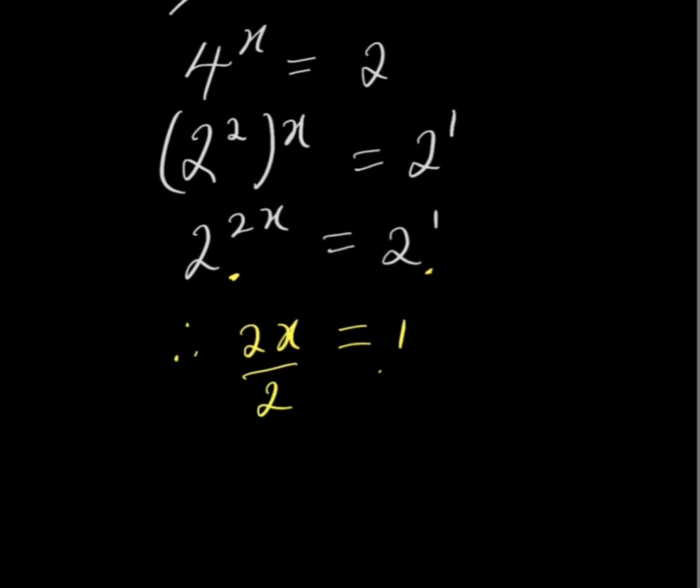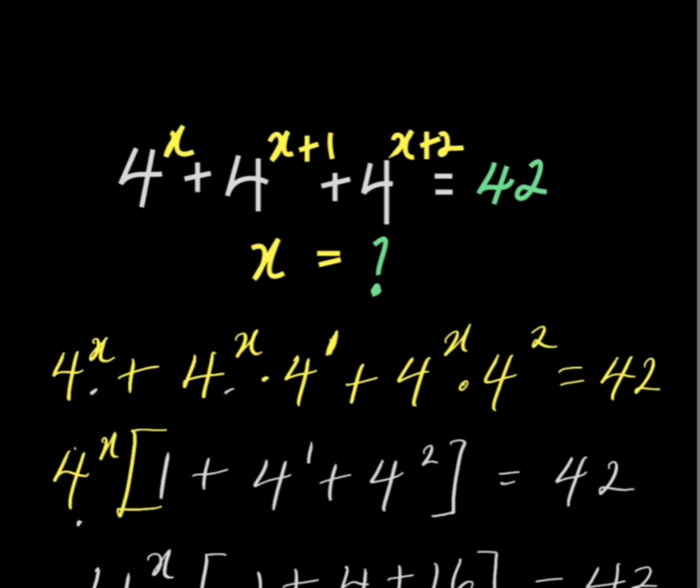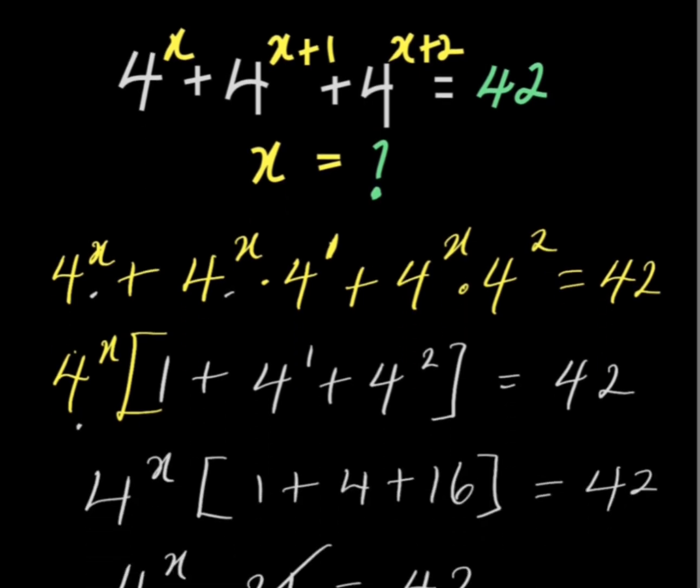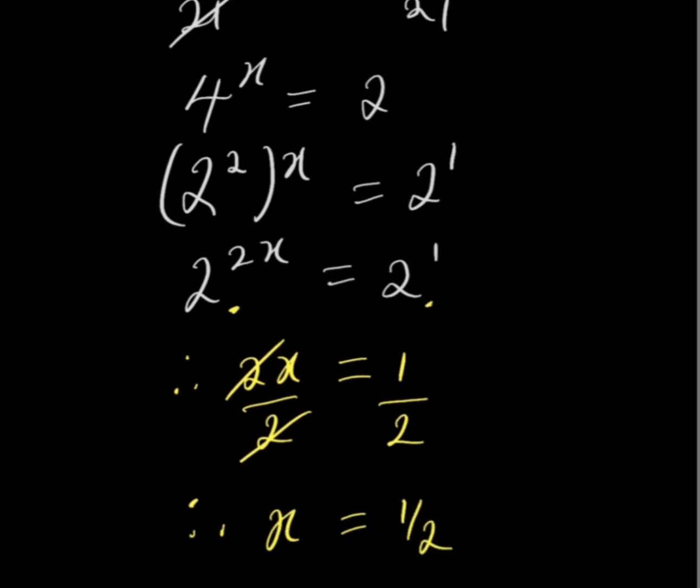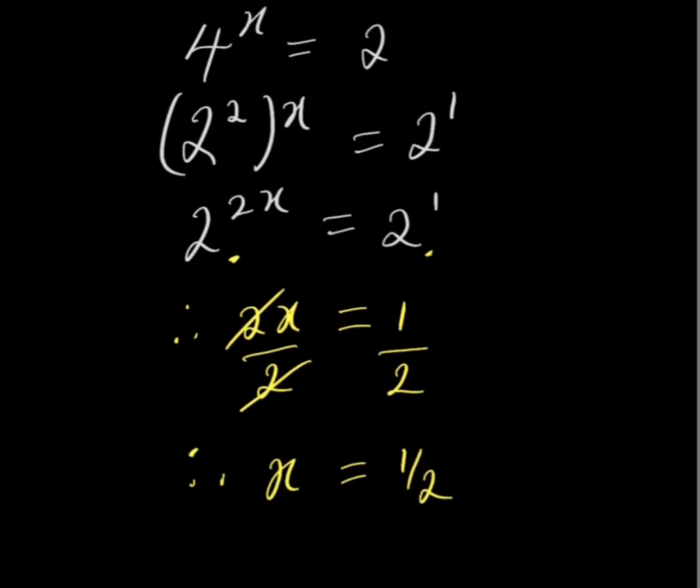Now, divide both sides by 2. When you do that, 2 will cancel out. You can now have that the value of x is 1 over 2. You can decide to test this by substituting it in the original equation. Then, you will see that you get both sides to be equal. So, the value of x is 1 over 2. Bye bye.